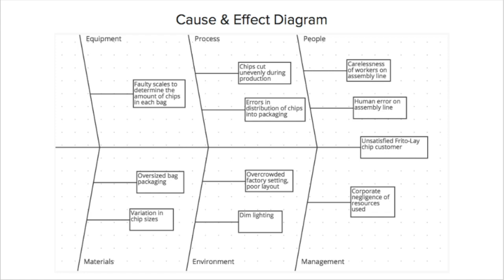In regards to the environment, an overcrowded factory setting and a poor layout may contribute, as well as dim lighting, which doesn't allow the workers to adequately see scales or equipment that they're using. In regards to people in the process, carelessness of workers on the assembly line may contribute, as well as simple human error of people on the assembly line.